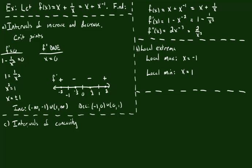Let's finish by finding the intervals of concavity. This process is exactly the same as what we did for the first derivative — we're just going to do it for the second derivative. We start by finding all places where the second derivative equals 0 and all places where the second derivative does not exist.